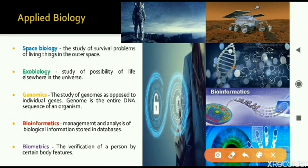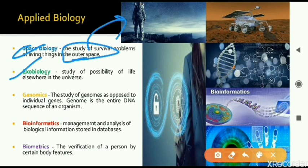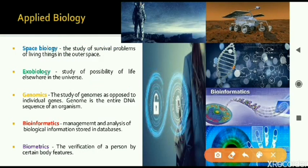Next is space biology and exobiology — both are closely linked. In space biology, we look at the possibility of life in outer space and how astronauts can survive there. In exobiology, we look for the possibility of life on other planets — for example, is life possible on Mars or on the Moon? If we are looking for the possibility of life anywhere else in the universe, that is exobiology. If we are looking at problems faced by human beings in outer space, that is space biology. Next one is genomics.